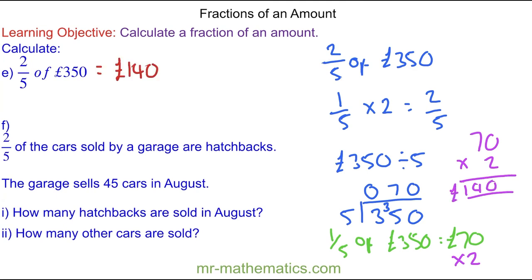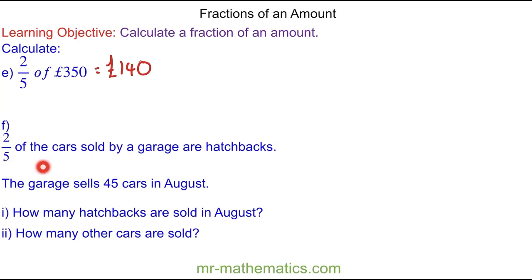And for question F, we're told that two fifths of the cars sold by a garage are hatchbacks. And the garage sells 45 cars in August. And we've been asked to work out how many hatchbacks are sold in August. So we're working out two fifths of the total cars, which is 45. So two fifths of 45.